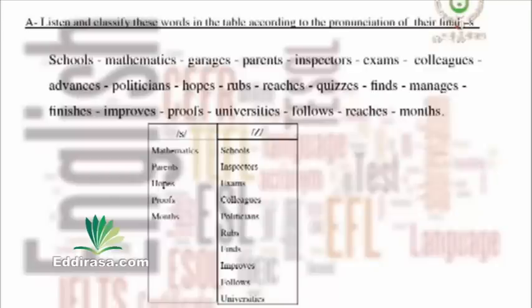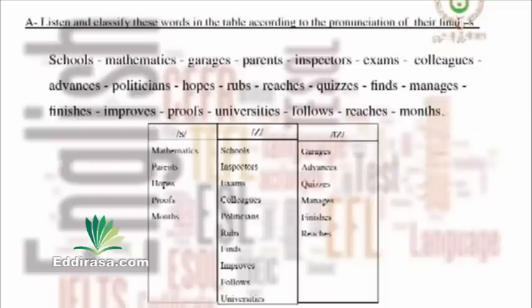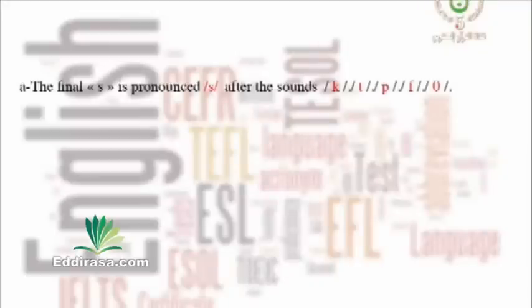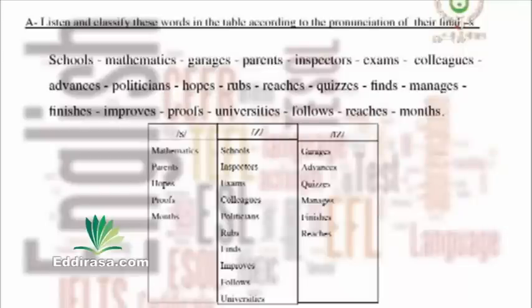The third column — final S heard as /ɪz/ — includes: garages, advances, quizzes, manages, finishes, and reaches. Now let's draw the rule. In the first column, the sounds before the final S are: /k/ (mathematics), /t/ (parents), /p/ (hopes), /f/ (proofs), /θ/ (months). So the final S is pronounced /s/ after the sounds /k/, /t/, /p/, /f/, and /θ/.